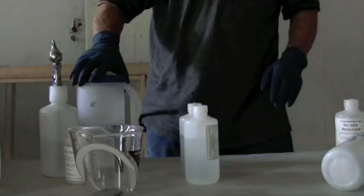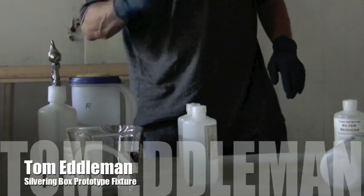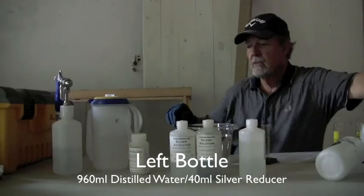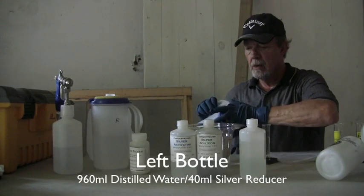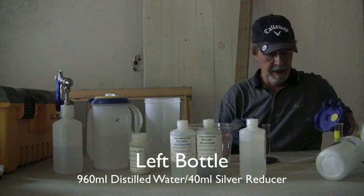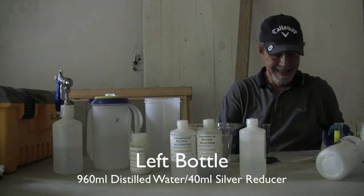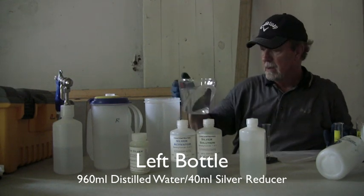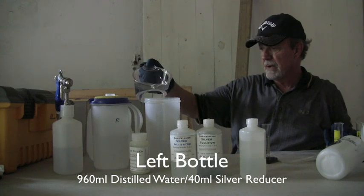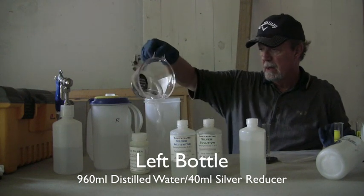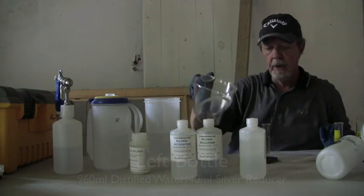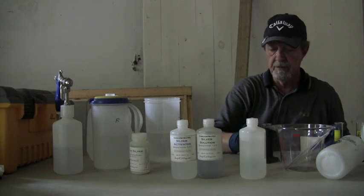That's got the right bottle solution. The left bottle, we're going to put 960 milliliters of distilled water and 40 milliliters of the silver reducer.